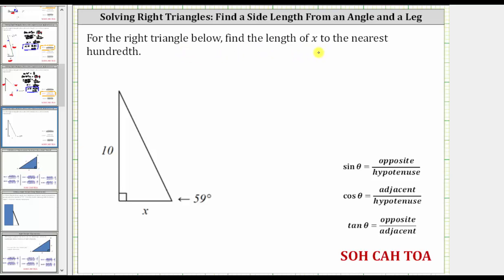For the right triangle below, find the length of x to the nearest hundredth. Looking at the given right triangle, notice we are given this angle here that measures 59 degrees.